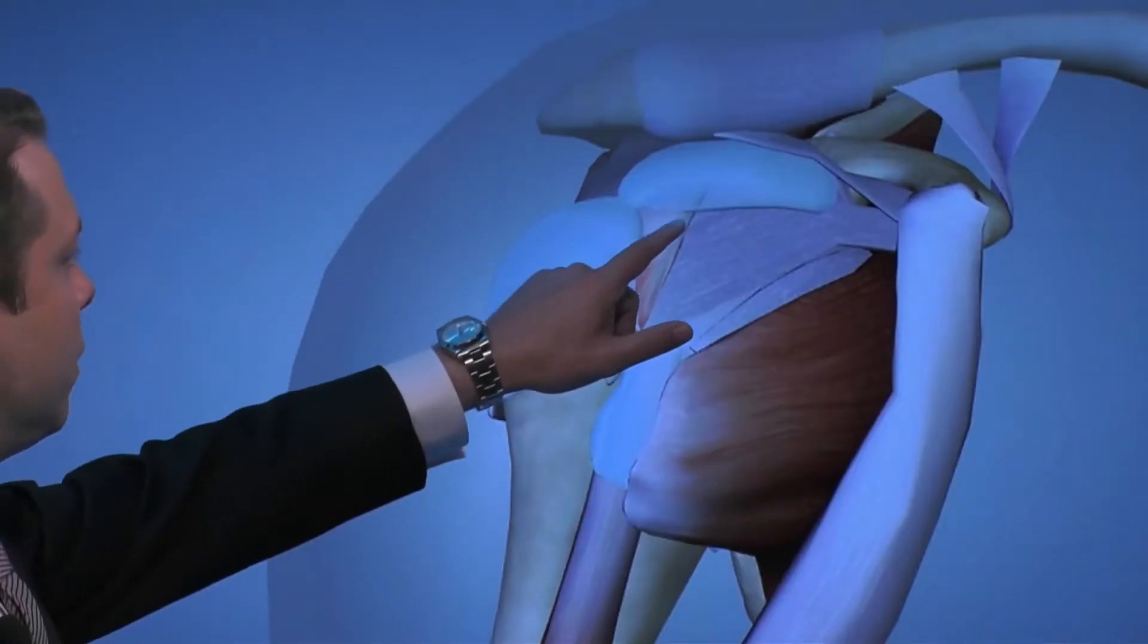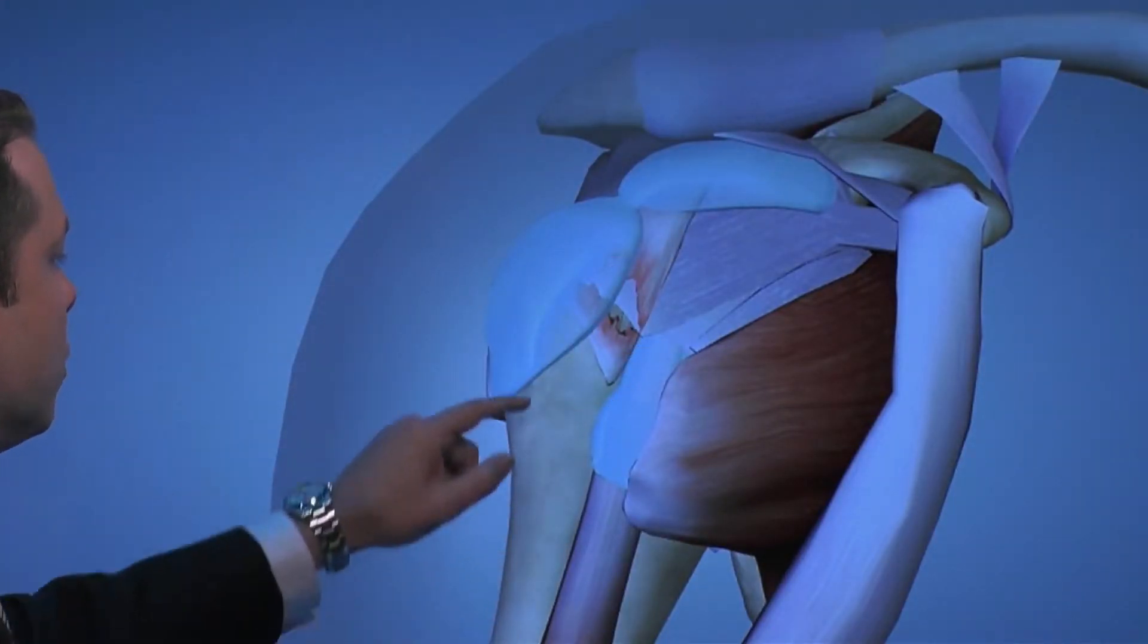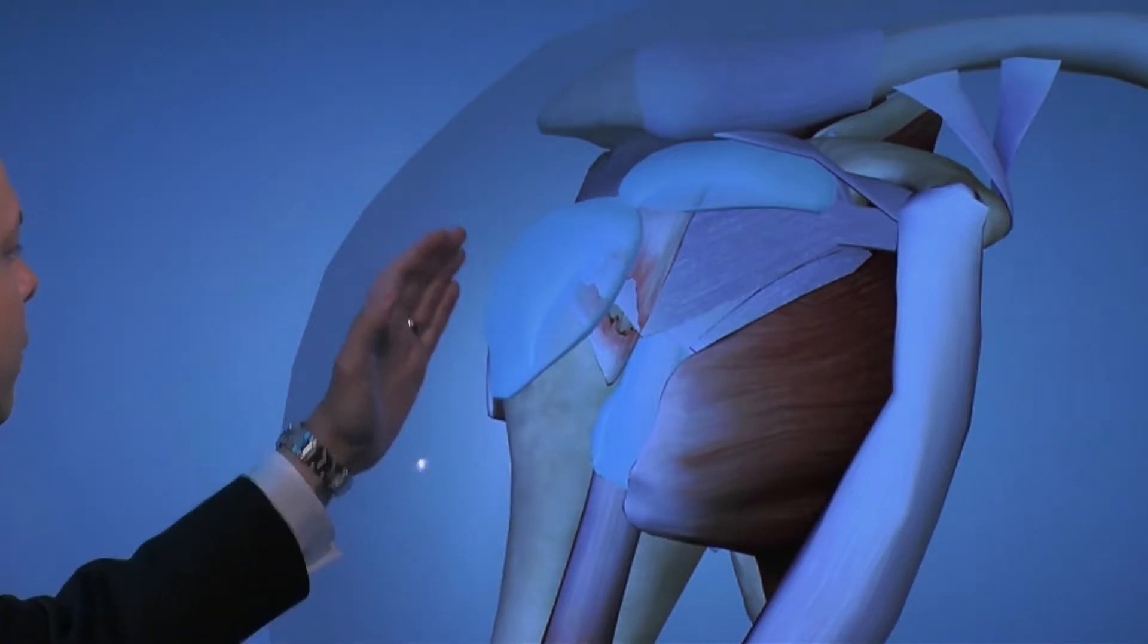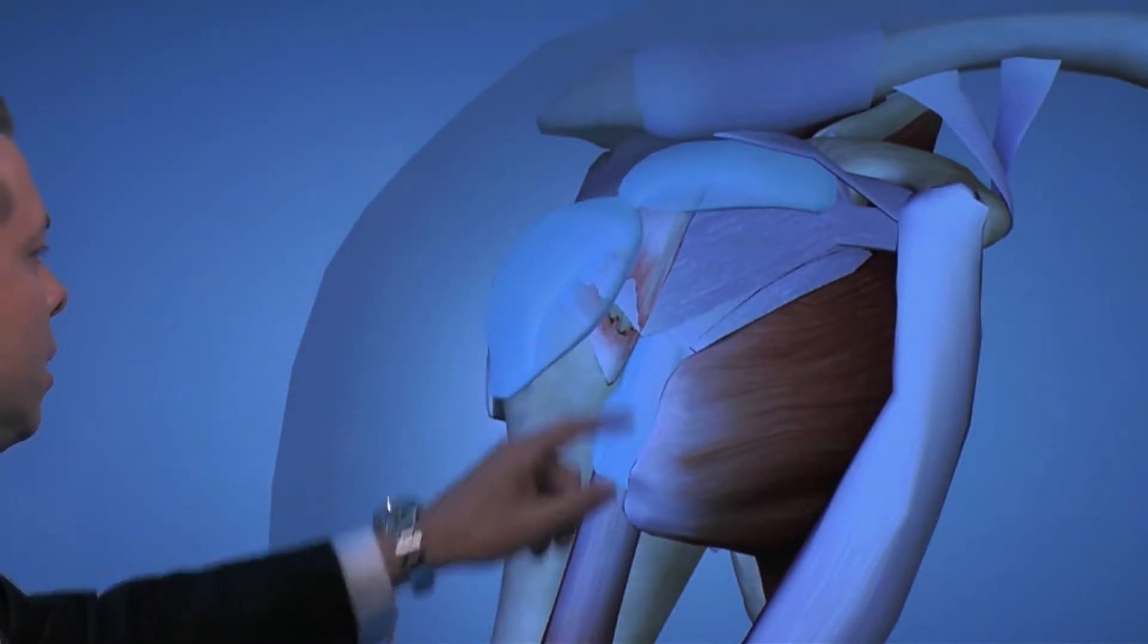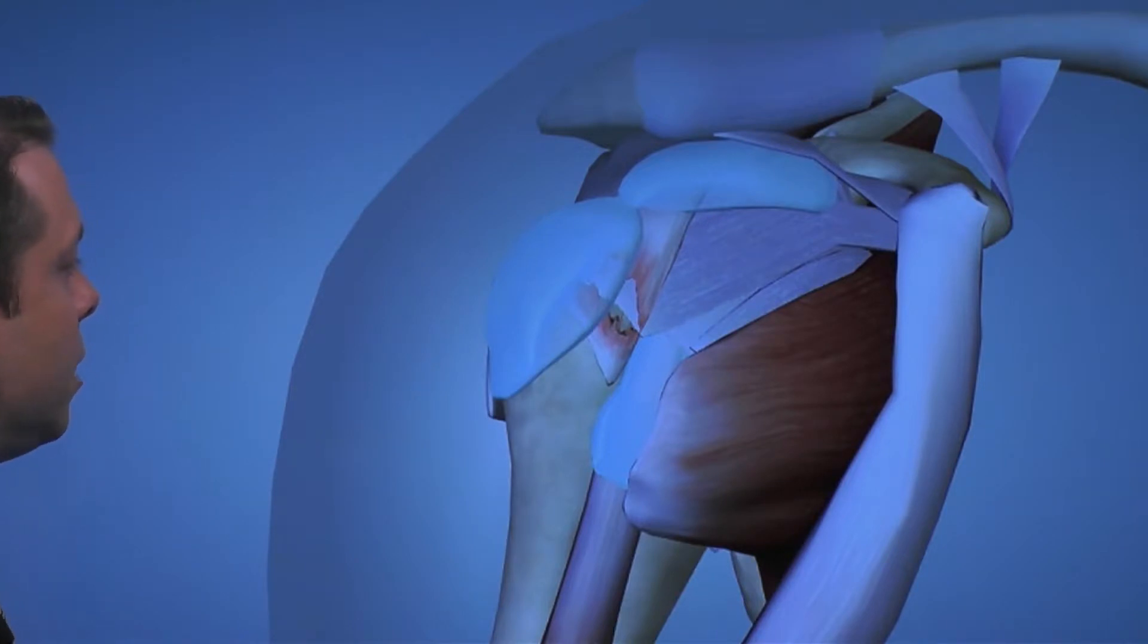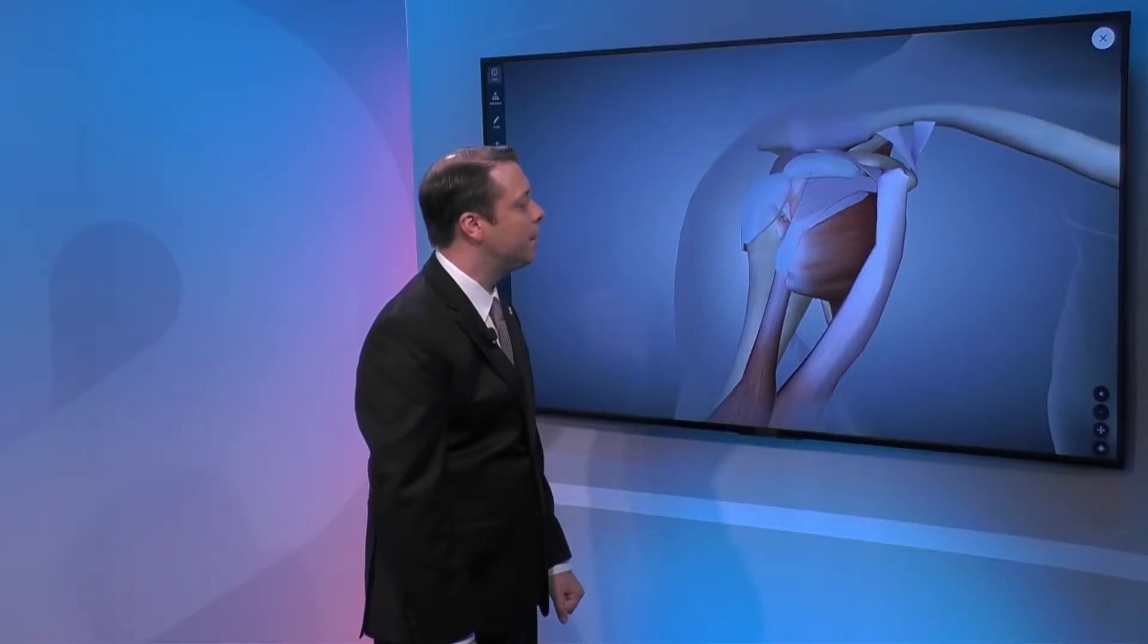Here we see where the tendon is coming across and connecting into the humerus area, which would be the lateral side of the arm here. We see obviously a pretty significant tear here, and that looks pretty much like a full tear of the tendon.